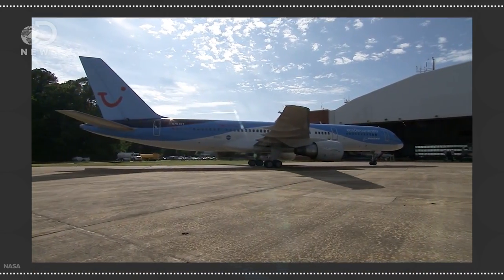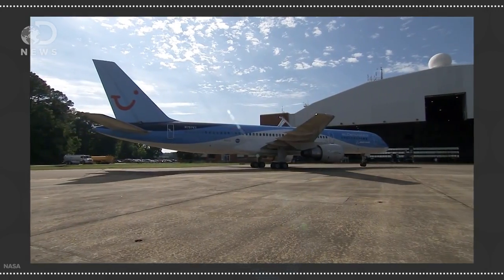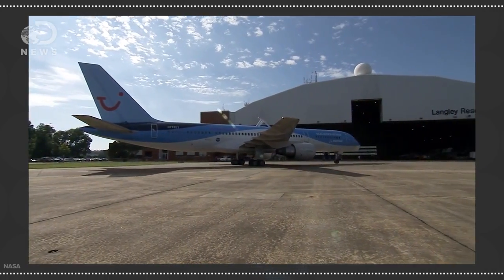Earlier this year, Boeing and NASA launched the Eco-Demonstrator, a 757 which doesn't burn a new fuel, but does improve fuel efficiency. The plane's tail is 17 percent smaller and contains tiny forced air jets, which helps stabilize the plane during takeoff and landing, increasing rudder efficiency up to 20 percent.